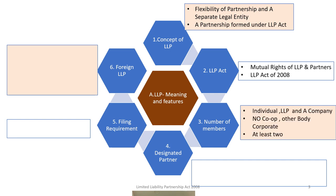An LLP has to have at least two members, and the members could be individuals, an LLP registered under the act, or a company with limited liability. A cooperative society or any other body corporate cannot be admitted as members of an LLP. If the number of members falls below two, the LLP must raise membership back to two or above within six months, failing which the member who carries on business during that period will attract personal liability.